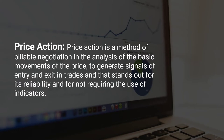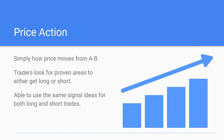First off, what is price action? Price action is a method of analysis of the basic movements of price to generate signals of entry and exit in trades, and it stands out for its reliability and not requiring the use of indicators. That sounds extremely complicated, but that is the textbook definition. The easiest way to look at price action is simply how price moves on a chart from A to B. Traders then look for areas of either support or resistance and can get long or short from those areas.